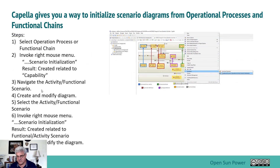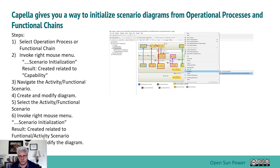The steps to do this: first, select the operational process or functional chain; then invoke an initialization to build the scenario diagram; navigate to the activity or functional scenario; create and modify the diagram. You can also repeat the operation a second time to build the entity relations scenarios. I'm going to stop and go over to the tool and do two of these examples.